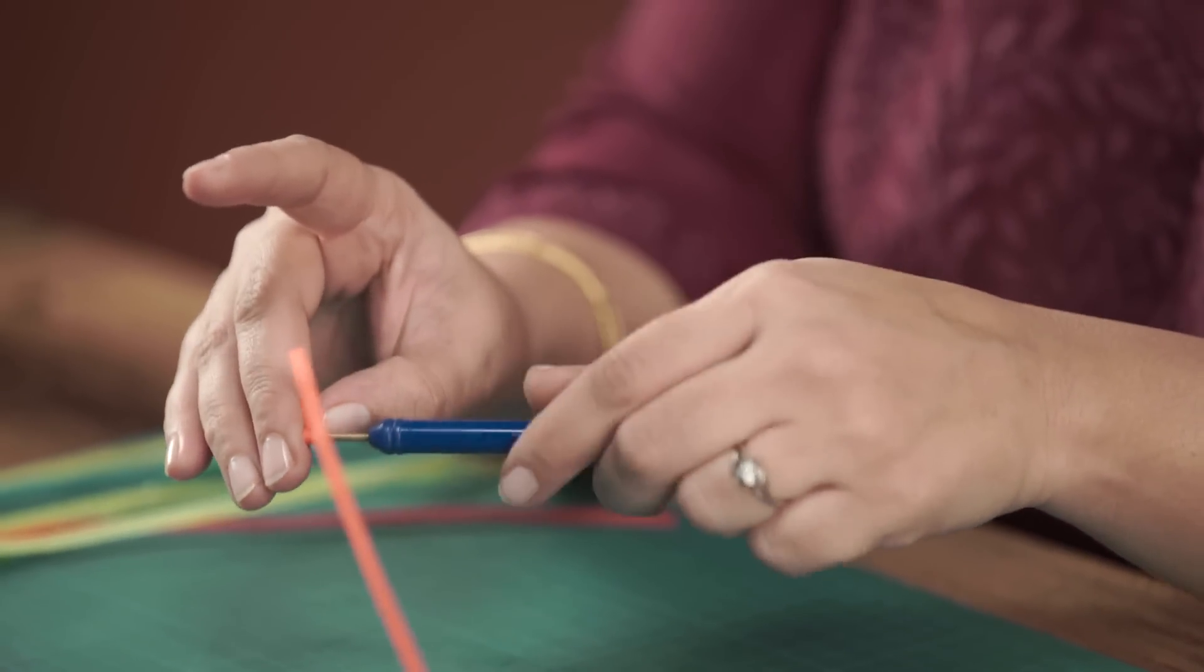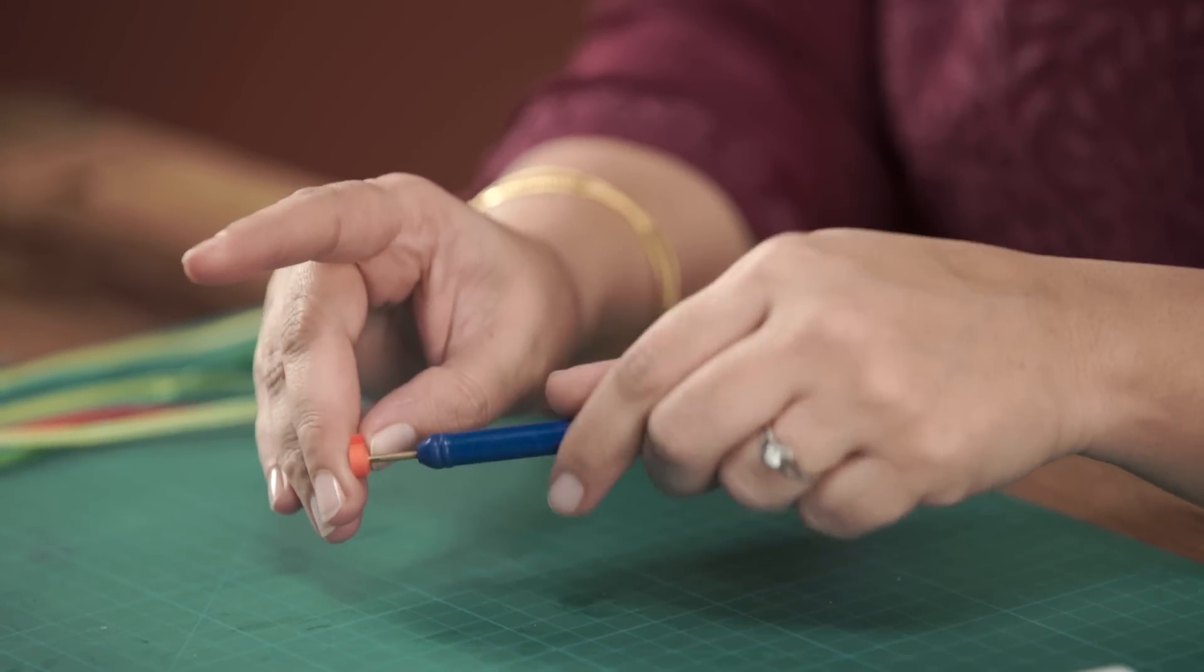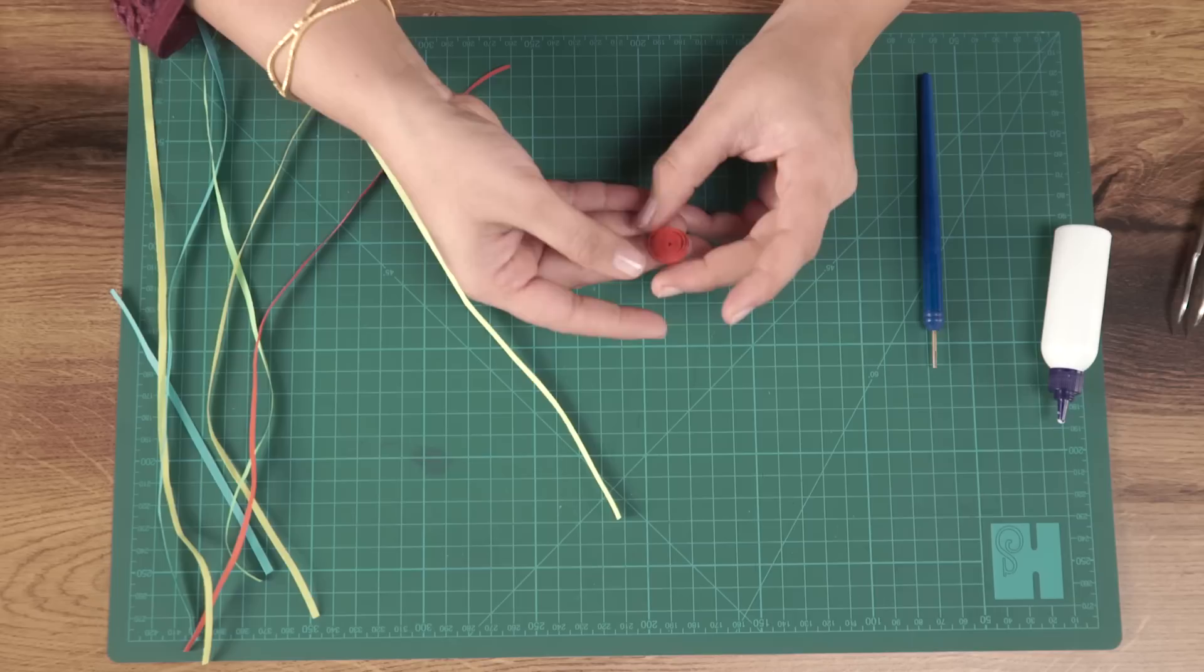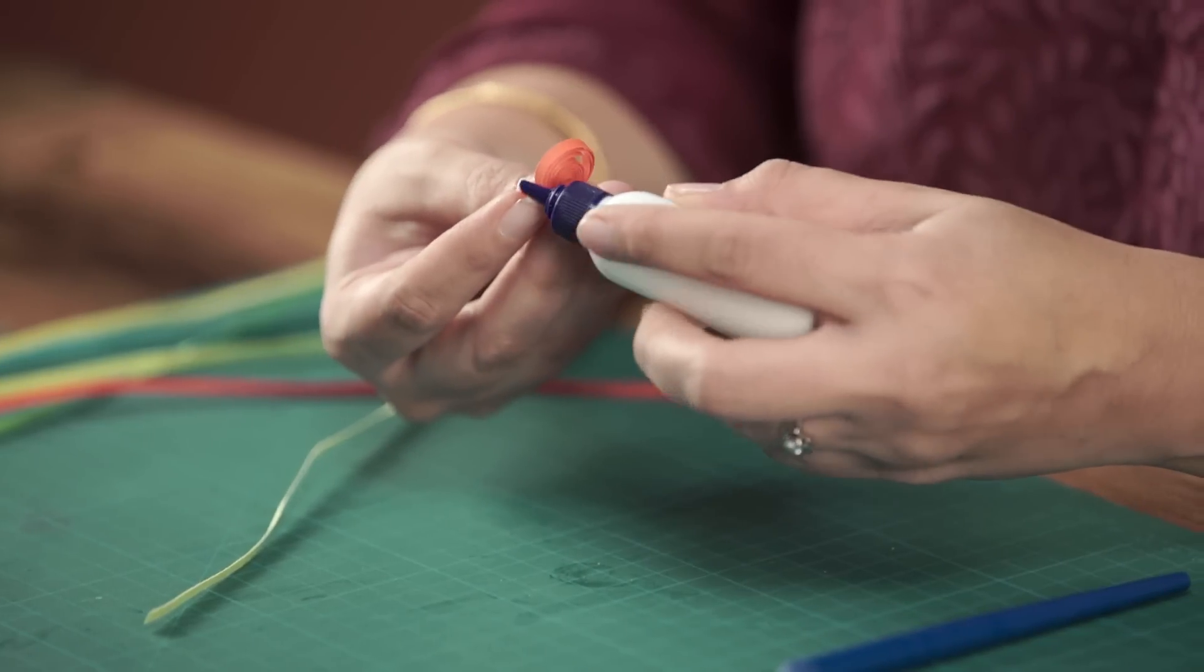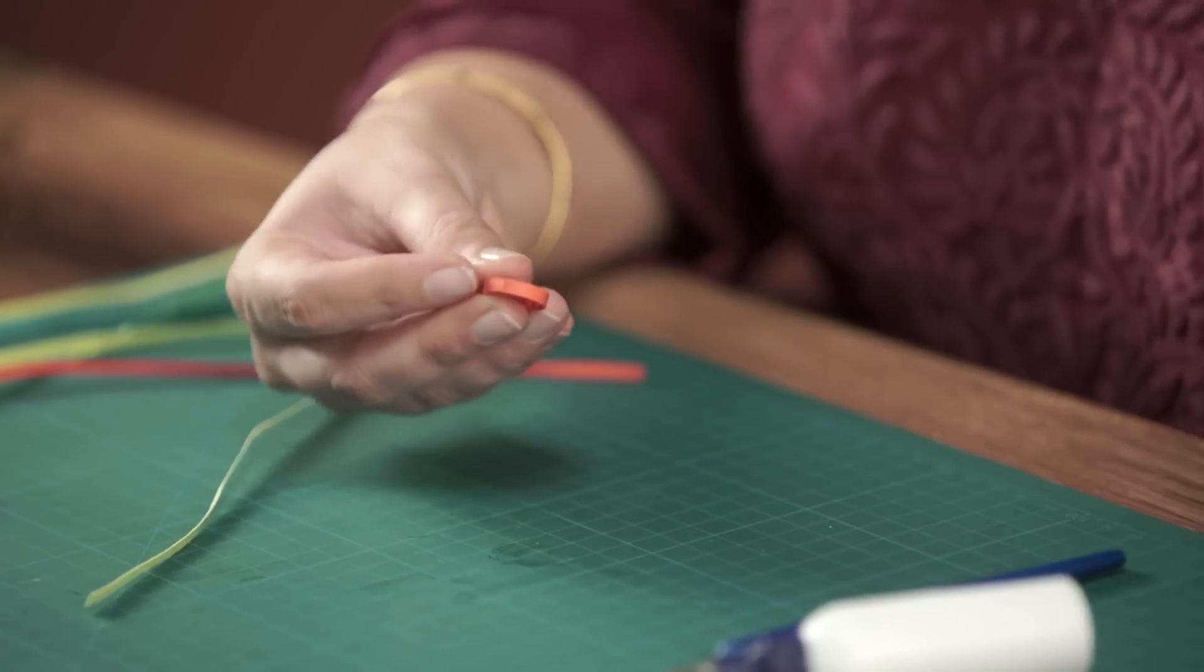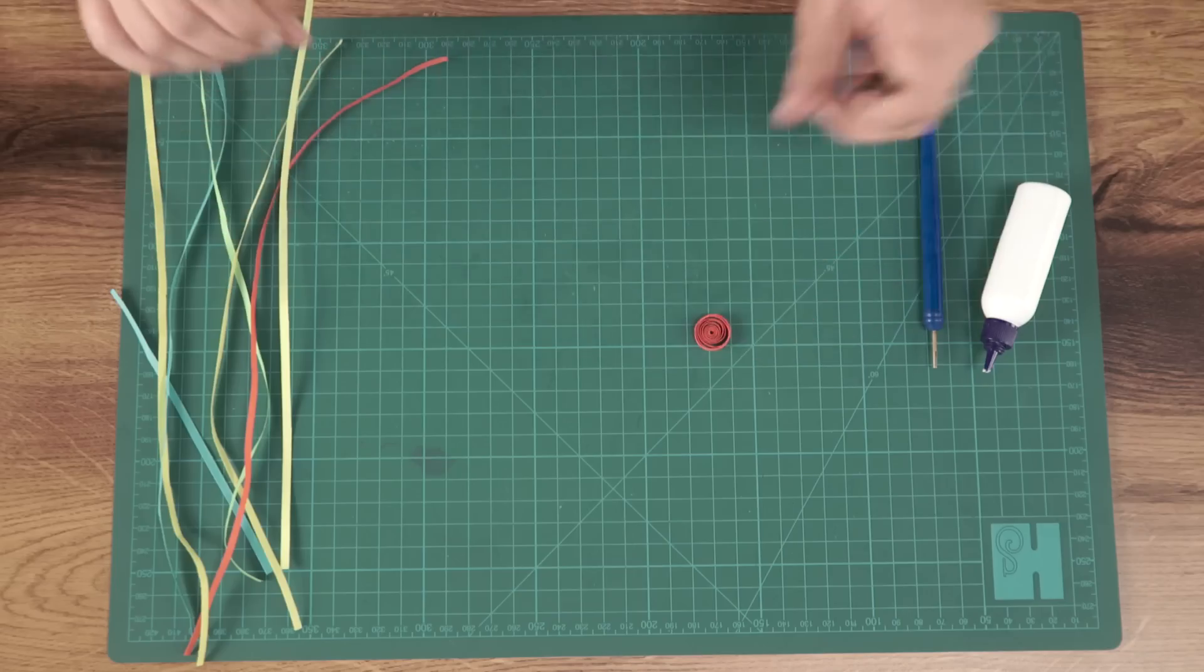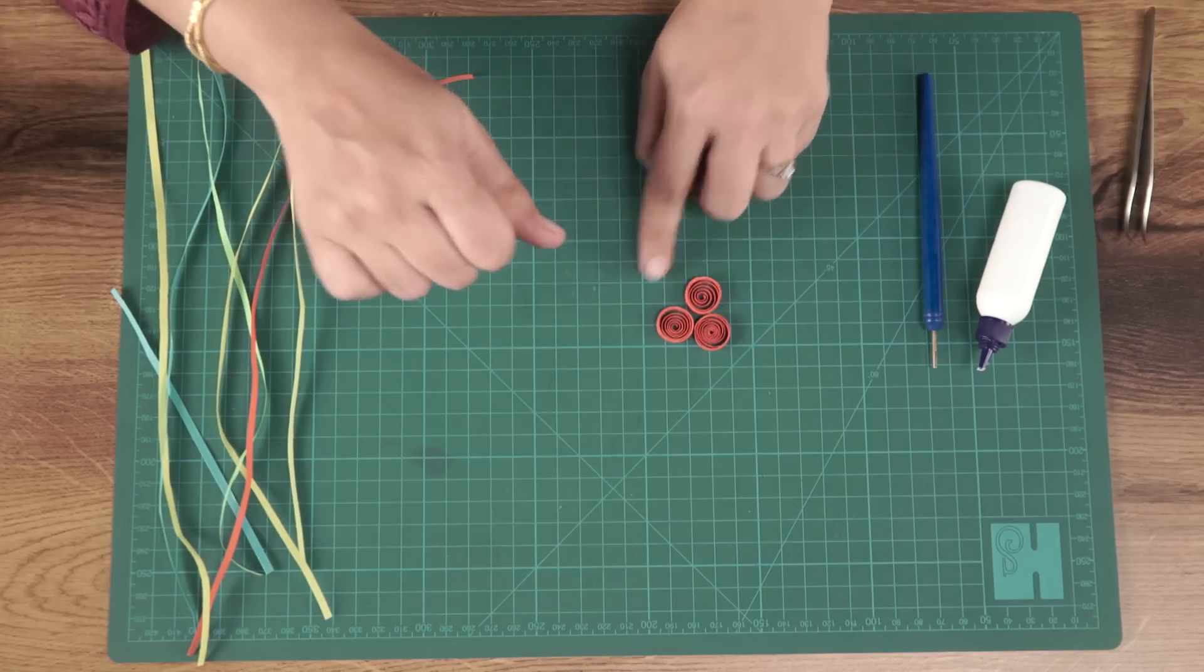A single petal requires three strips of paper. You loosen it up a bit, glue it, take your tweezer, tighten the roll. I've got two more made, so this is how they're going to look.